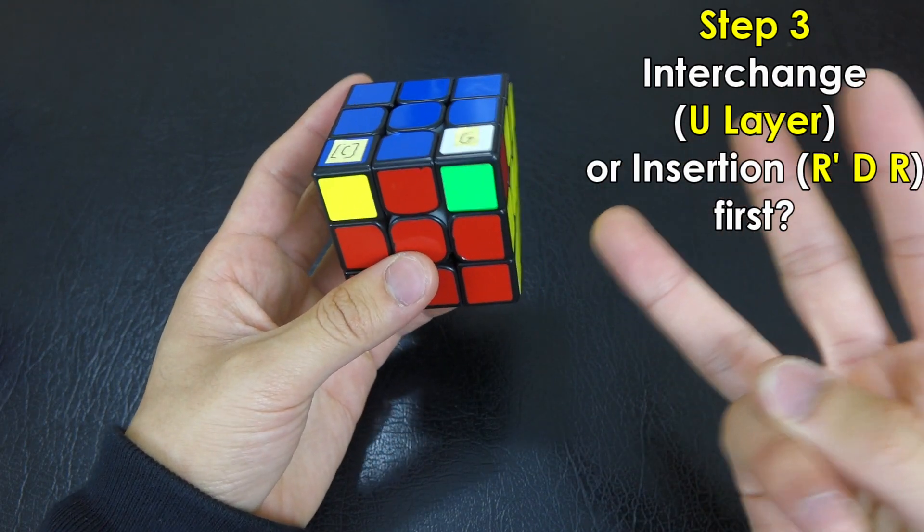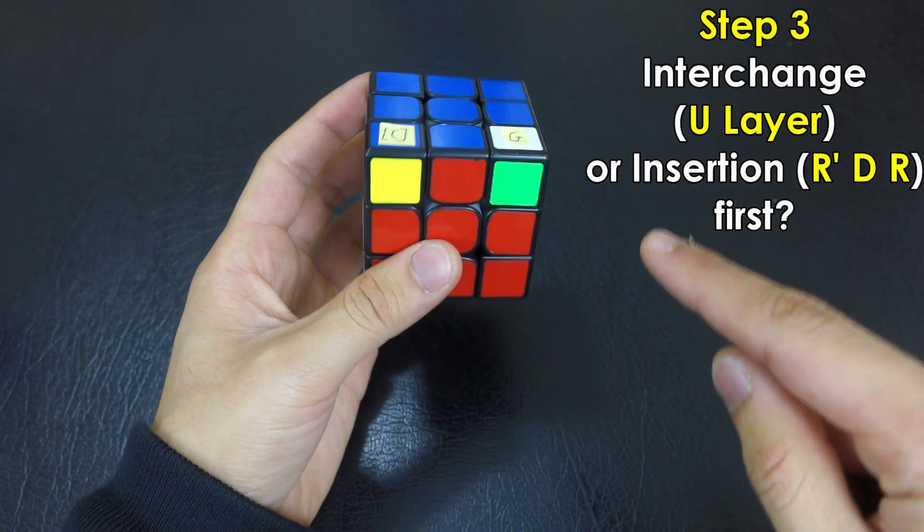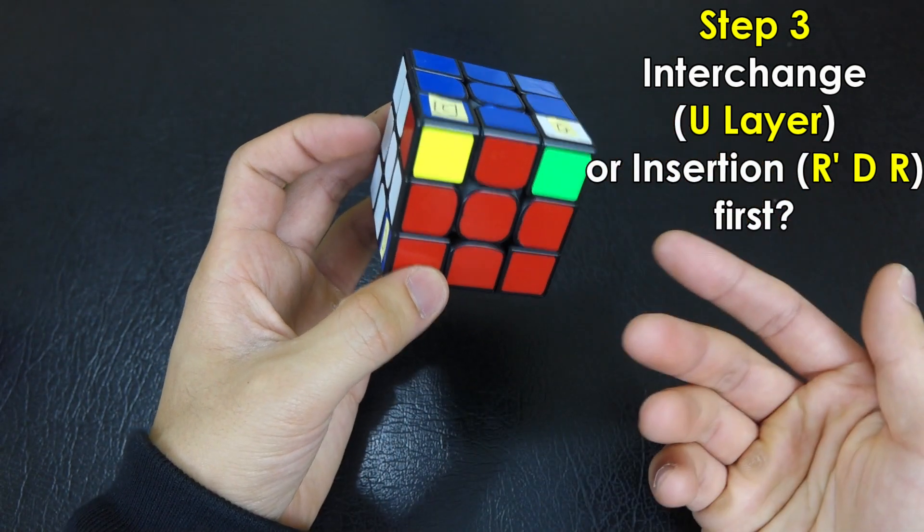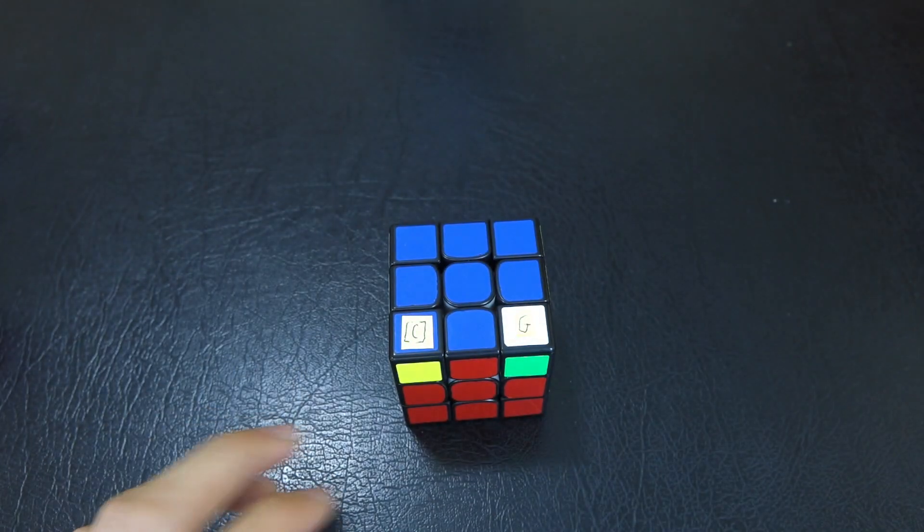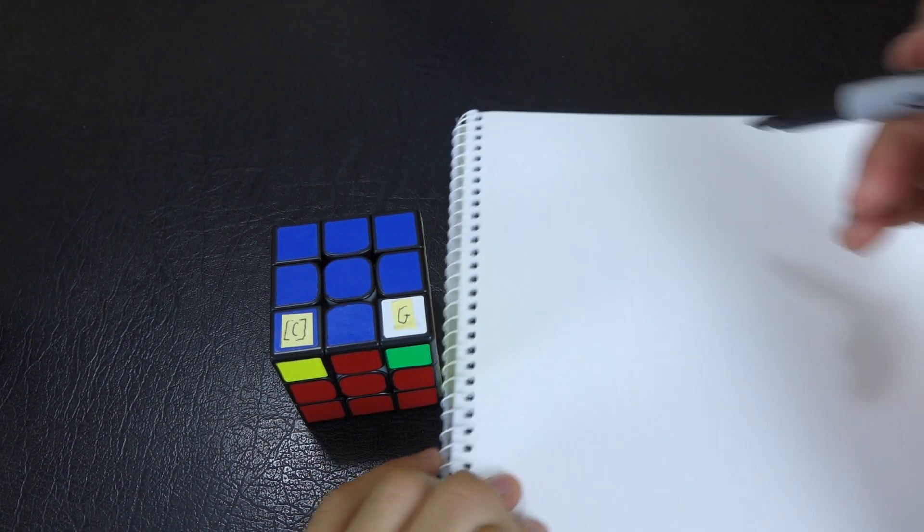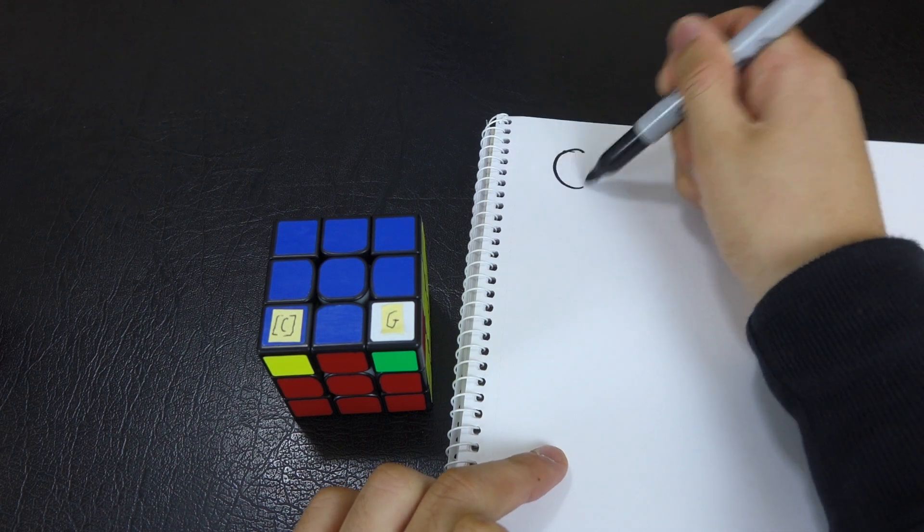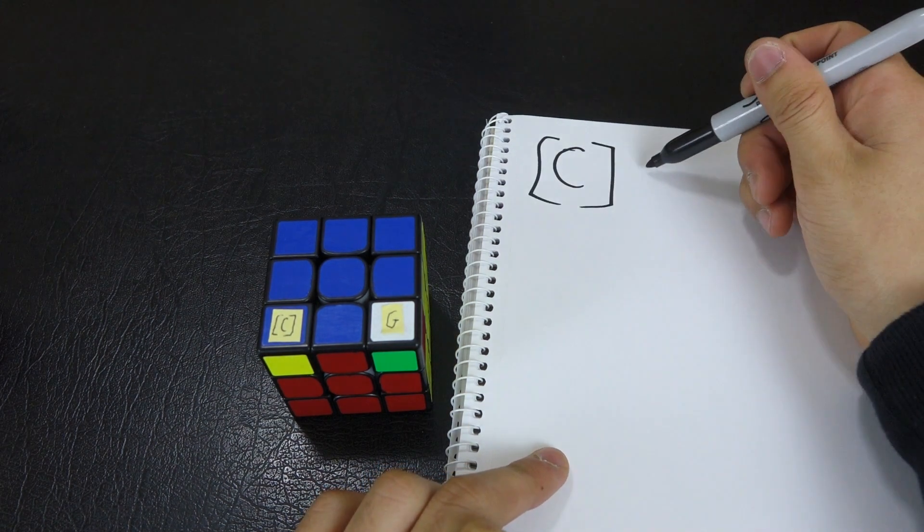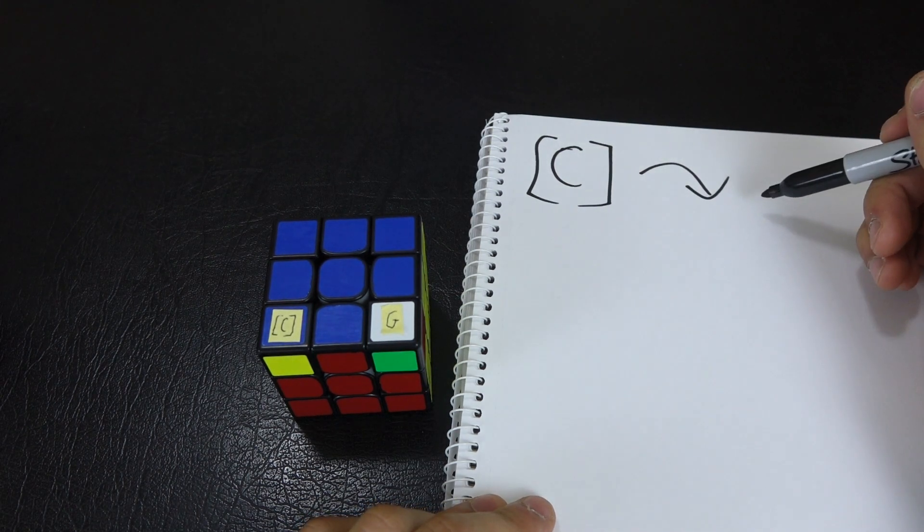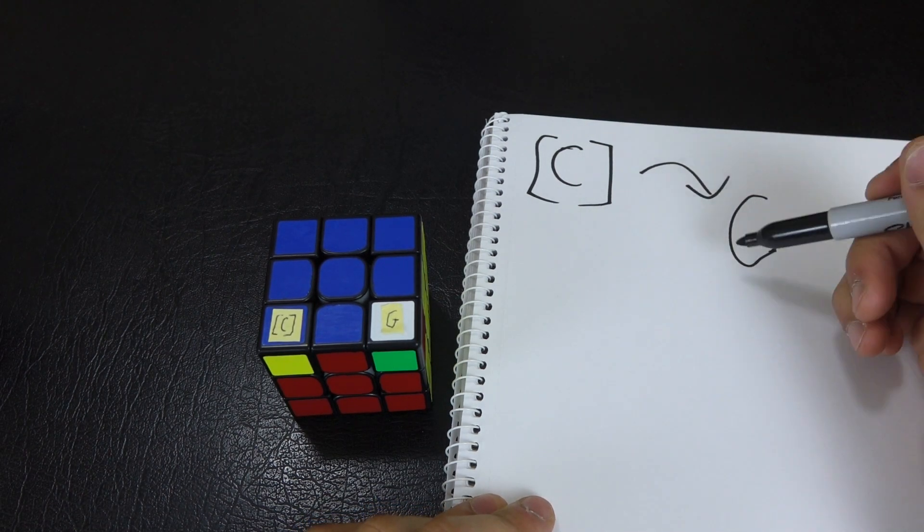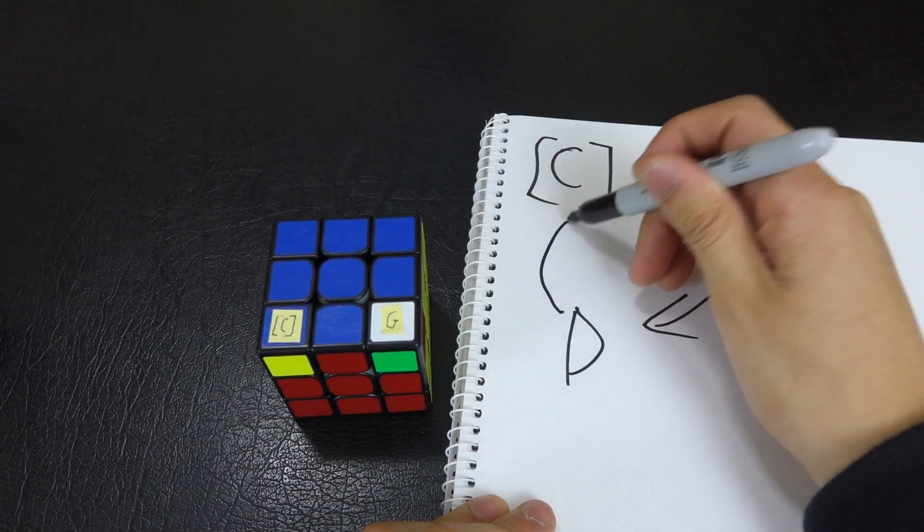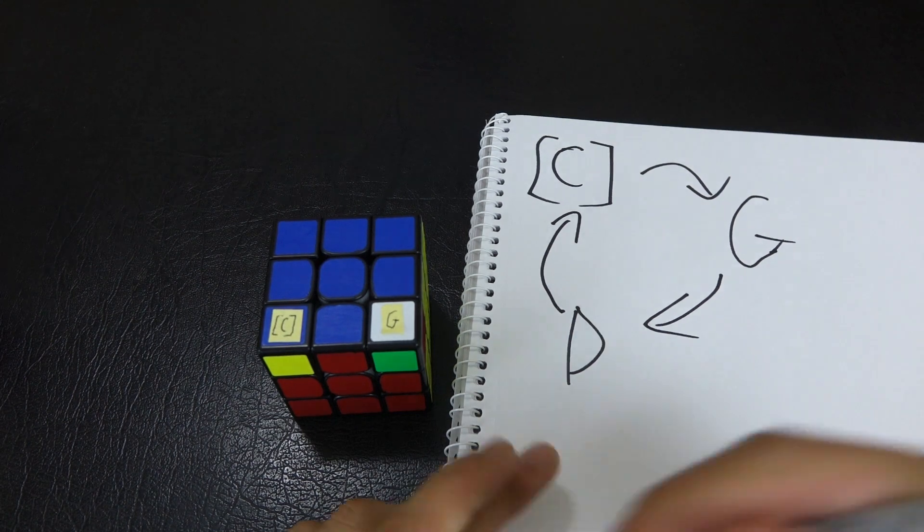The third step is to figure out which one we do first. Do we do the conveyor belt move first, or do we do the insertion first? In order to figure that out, we need to figure out which cycle we're trying to do here. Right now, what I'm trying to do is cycle around the buffer piece, and have the buffer piece go to where G is, and have G go to where D is, and back to there. This would solve the case for GD.